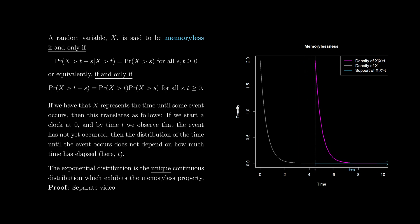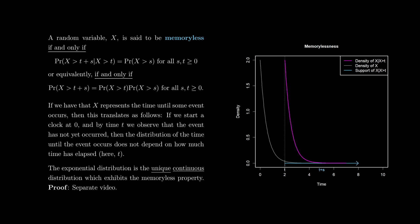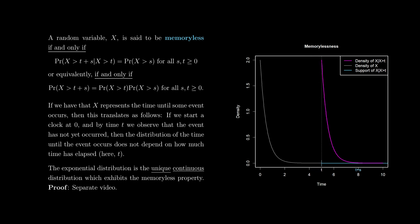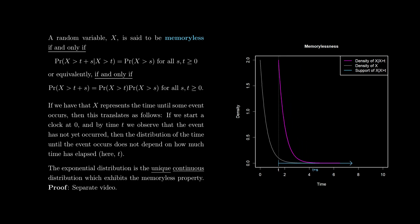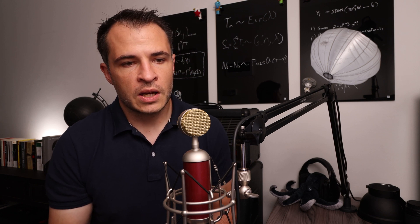If x represents the time until some event occurs, then this property translates as follows: if we start a clock at time zero, and by some time t we observe that the event has not yet occurred, then the distribution of the time until the event occurs does not actually depend on how much time has elapsed up until that point. It's a very interesting, almost counterintuitive property. We'll spare the proof that the exponential distribution is the unique continuous memoryless distribution for a separate video — you can just take it as fact for now.